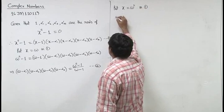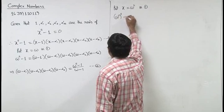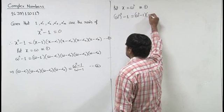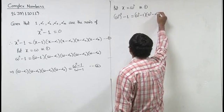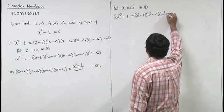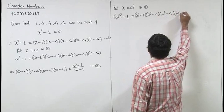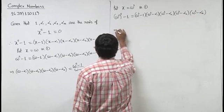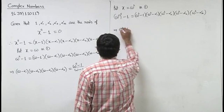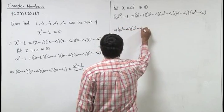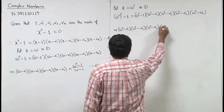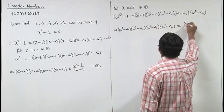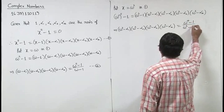Similarly, putting x equal to omega squared, we have (omega squared) raised to power 5 minus 1 equal to (omega squared minus 1)(omega squared minus alpha 1)(omega squared minus alpha 2)(omega squared minus alpha 3)(omega squared minus alpha 4). So (omega squared minus alpha 1)(omega squared minus alpha 2)(omega squared minus alpha 3)(omega squared minus alpha 4) equals (omega raised to power 10 minus 1) upon (omega squared minus 1).